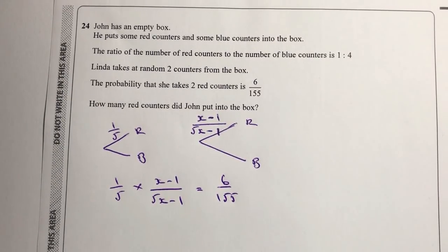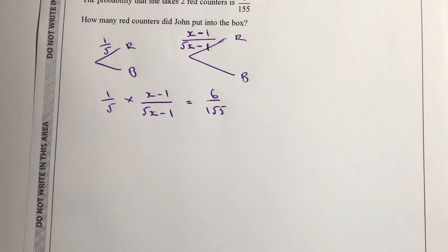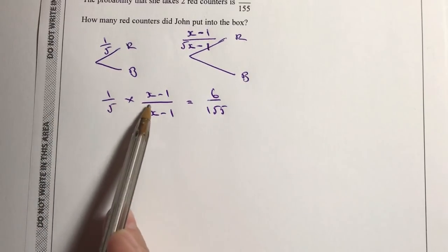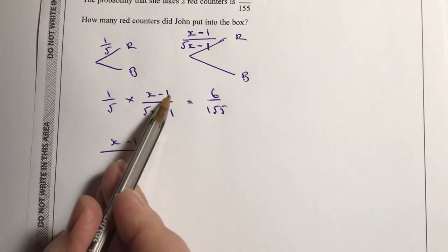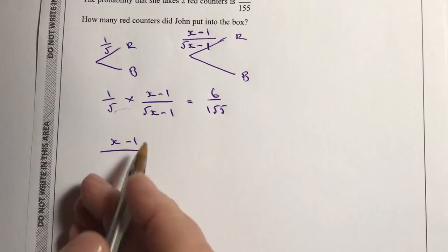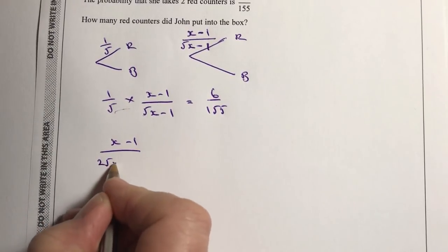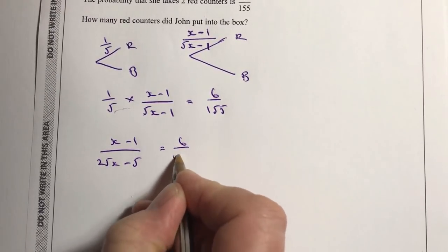With probabilities you multiply along the branches, so we've got 1/5 multiplied by (x minus 1) over (5x minus 1), and that equals 6 over 155. Multiplying this out, the top gives x minus 1 (since 1 times (x minus 1) is still x minus 1), and the bottom gives 5 times 5x which is 25x, then 5 times minus 1 which is minus 5. So we have (x minus 1) over (25x minus 5) equals 6 over 155.